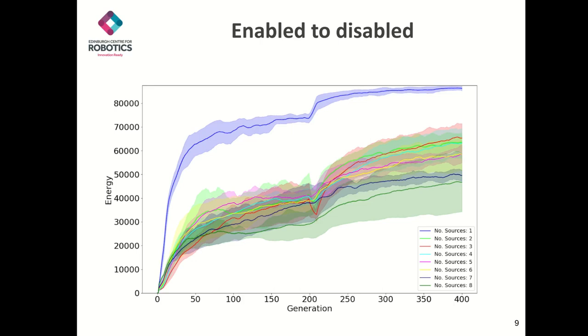The first 200 generations are very similar to what has been observed already. The swarm learns to optimize their behavior, and is similar to the outcome as seen earlier with regards to performance. However, when the signaling is disabled, there is a dip in performance for some of the swarms.